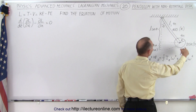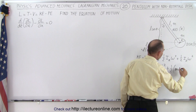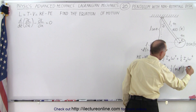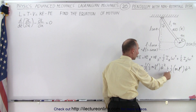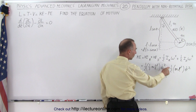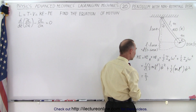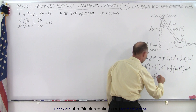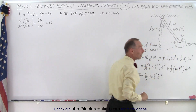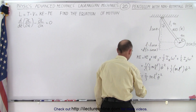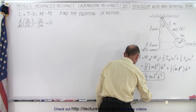For the disc, we treat it as a point mass at distance L from the pivot, so its moment of inertia is m L squared. Note that the mass of the disc and the mass of the rod are assumed to be the same value m. Combining the terms gives one-sixth plus one-half, which is four-sixths, or two-thirds. So the total kinetic energy is (2/3) m L² θ̇².